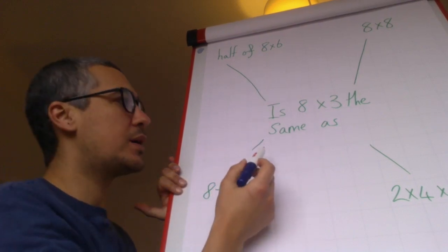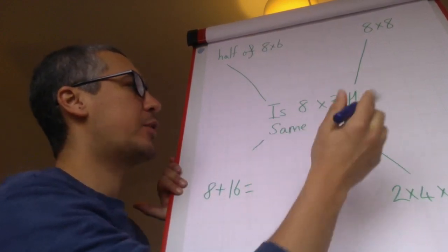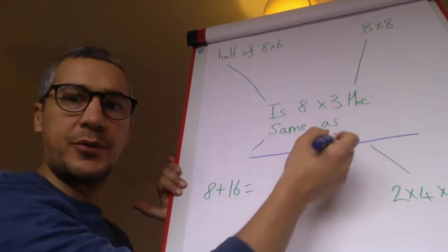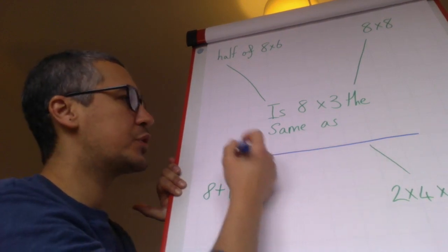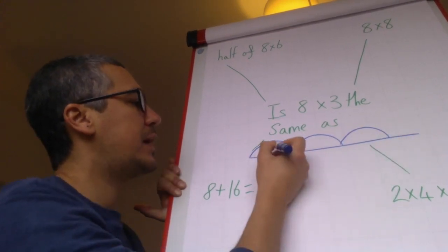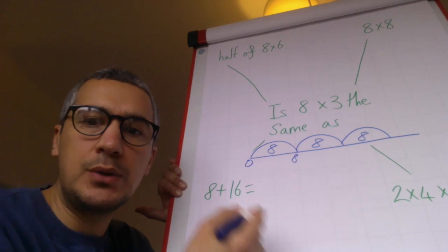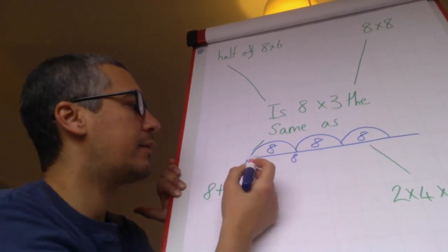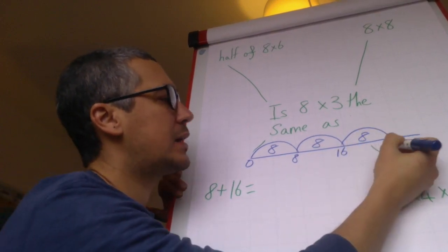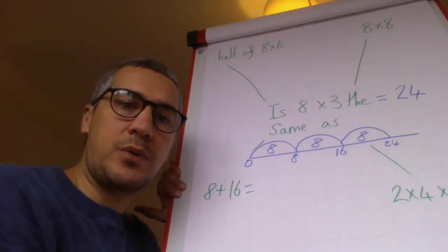So what we need to do is we need to work out what eight times three is and what half of eight times six is. So eight times three, if I do a number line I've got eight jumps of three or three jumps of eight. So just because of the size of my board I'm gonna do three jumps of eight. So I've got one jump of eight, two jumps of eight, three jumps of eight. Eight, eight, zero. So I know my first jump must be eight and then I can skip count in twos or skip count in fours to get the rest of the answers. So I've got one jump of eight, two jumps of eight. Eight add eight is 16 and then add another eight equals 24. So I know eight times three equals 24.